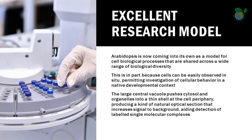Excellent Research Model. Arabidopsis is now coming into its own as a model for cell biological processes that are shared across a wide range of biological diversity. This is in part because cells can be easily observed in situ, permitting investigation of cellular behavior in a native developmental context. The architecture of plant cells is also helpful. The large central vacuole pushes cytosol and organelles into a thin shell at the cell periphery, producing a kind of natural optical section that increases signal to background, aiding detection of labeled single molecular complexes. Finally, plant cells display variations on basic cellular processes that allow for new experimental opportunities, an example being the architecture of cytokinesis.